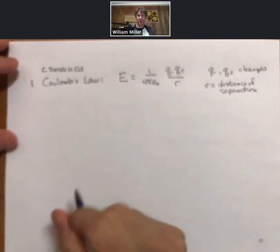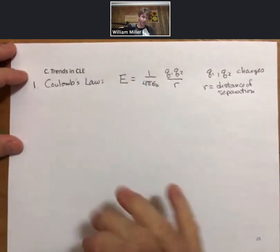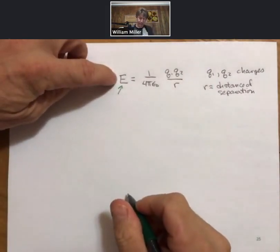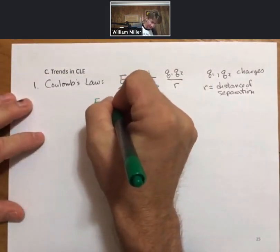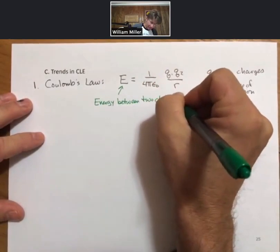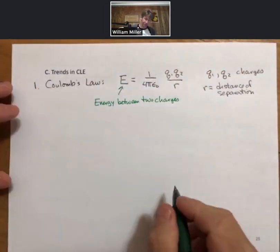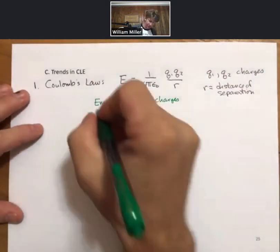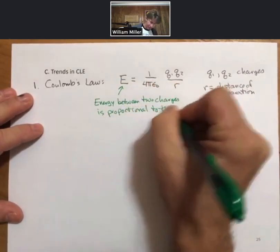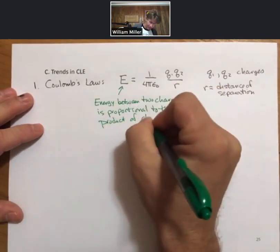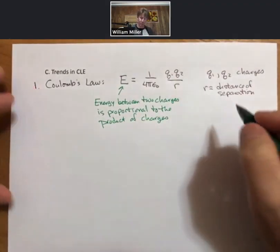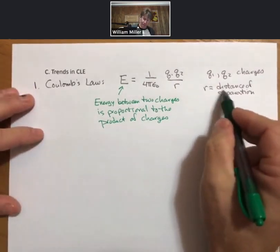Where q1 and q2 are charges and r is the distance of separation between them. So the energy between two charges is related to the product of the charges, or is proportional to the product of charges, meaning multiplying these two in the numerator, and inversely proportional to the distance of separation.